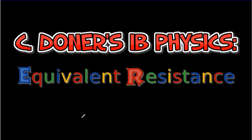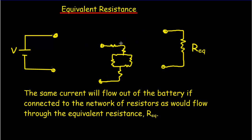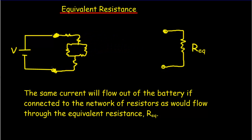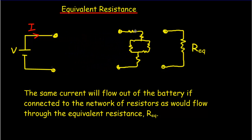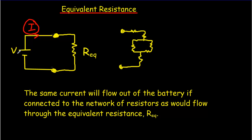Let's have a look at equivalent resistance. Let's say we've got a network of resistors connected across a battery of voltage V. There's going to be a certain current that flows out of the battery and into the network. If we've got an equivalent resistance, we could replace that network by a single resistor called the equivalent resistance such that the current coming out of the battery would be exactly the same. That's what's meant by an equivalent resistance.